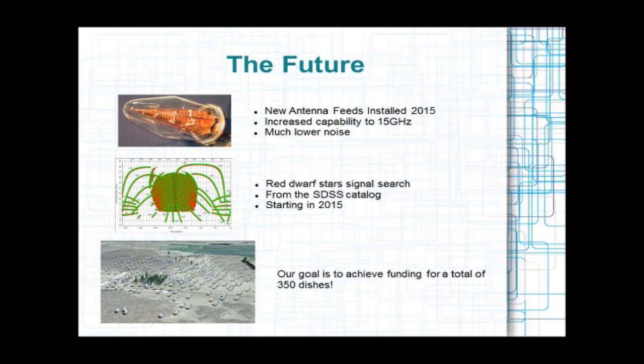And also we're thinking we're going to phase out of the Kepler targets and phase into looking at red dwarfs. So you see that second picture there, it looks like some kind of bug. That's actually the red dwarf, the Sloan Digital Sky Survey catalog. You plot those out in right ascension declination, you get this bug shape, and that's what we're going to be probably looking at next.